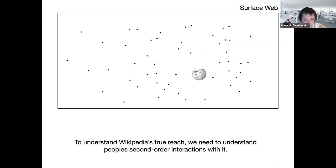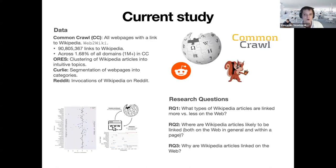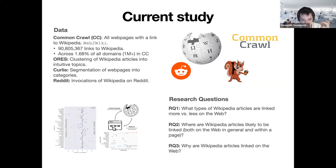To understand Wikipedia's true reach, I argue that we need to understand people's second-order interactions with it — in other words, how do other websites link to Wikipedia? This is something we term Wikipedia's webinization. In this paper, we stream through the Common Crawl dump and find all web pages that link to Wikipedia, representing 90 million links across 1.68% of the surface web and more than 1 million domains. We rely on AORUS topics for coherent clustering of Wikipedia pages, as well as curly clusters to segment web pages into different categories. We also look at how Reddit shares Wikipedia as a digression to further contextualize our findings.